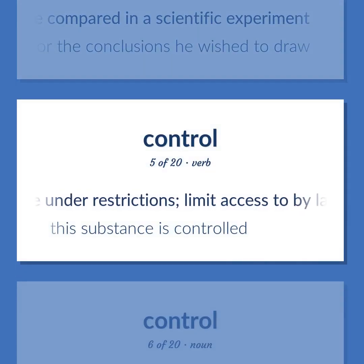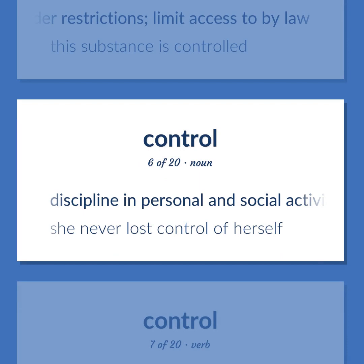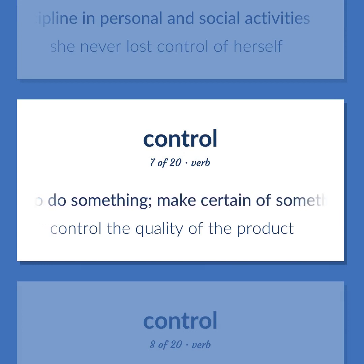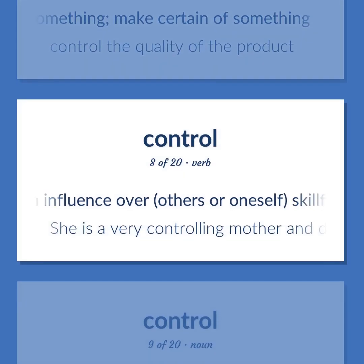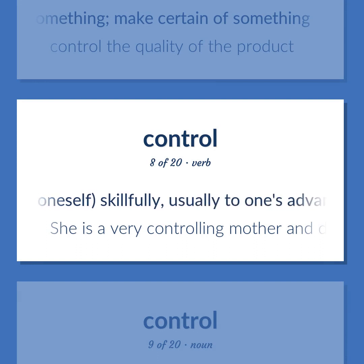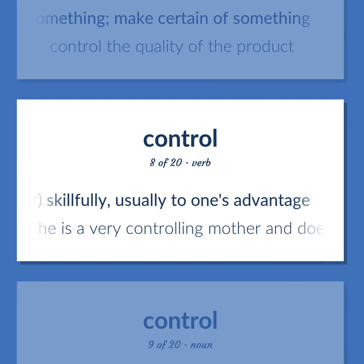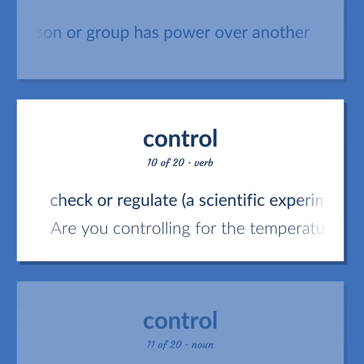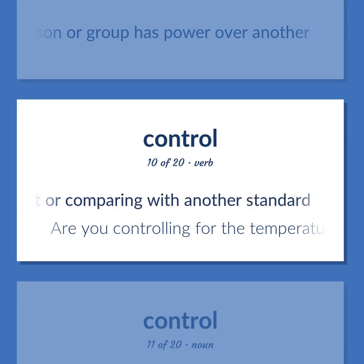Place under restrictions; limit access to by law. This substance is controlled. Discipline in personal and social activities. She never lost control of herself. Be careful or certain to do something; make certain of something. Control the quality of the product. Maintain influence over others or oneself skillfully, usually to one's advantage. She is a very controlling mother and doesn't let her children grow up. The state that exists when one person or group has power over another. Check or regulate a scientific experiment by conducting a parallel experiment or comparing with another standard. Are you controlling for the temperature?